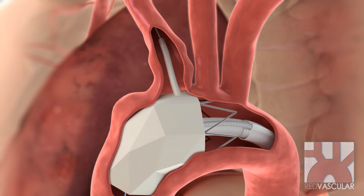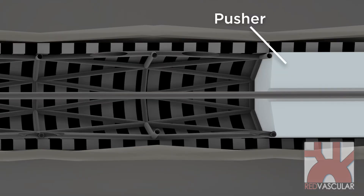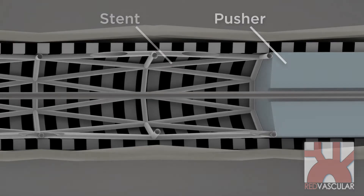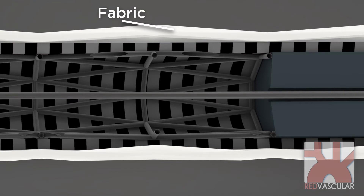Let's look at the branch delivery mechanism, which permits unsheathing of the branch graft from the same access site as for the main graft. The pusher stabilizes the wire stent during delivery. The branch sheath lies between the stent and the outer fabric.